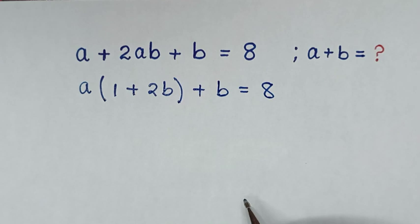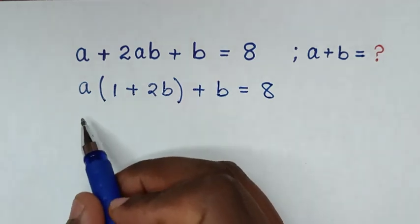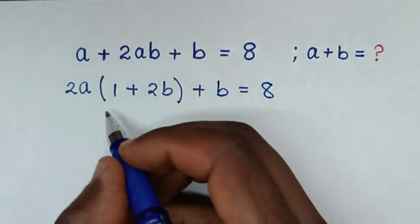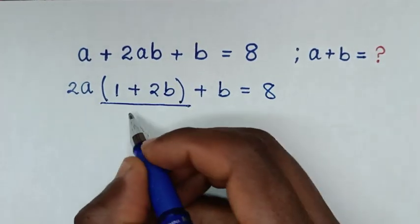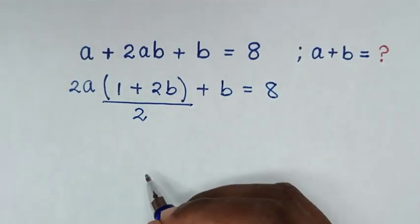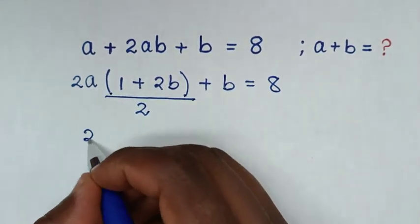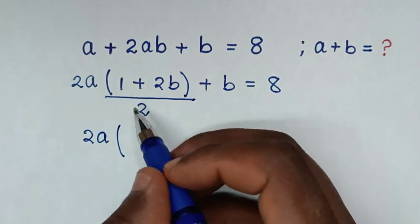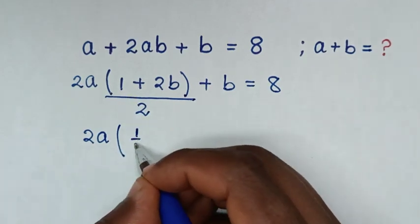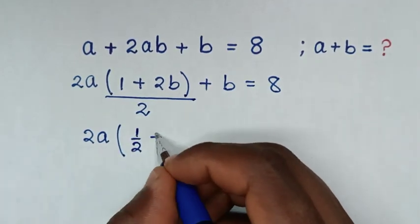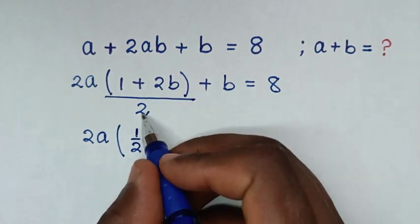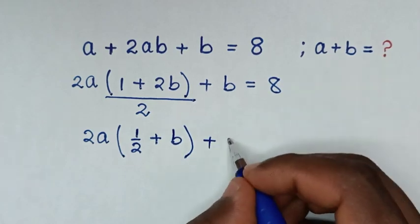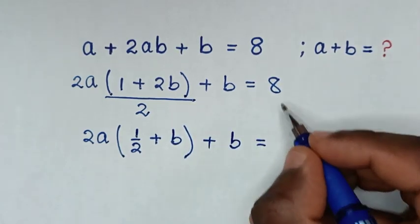Then in the next step, we know that 2 divided by 2 is 1, so in here we will multiply by 2 and then divide by 2. So it will be 2a, then bracket, 1 divided by 2 is 1 over 2, then plus 2b divided by 2 is b, bracket, then plus b is equal to 8.